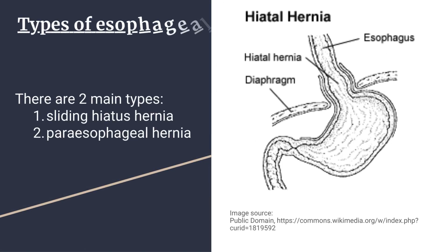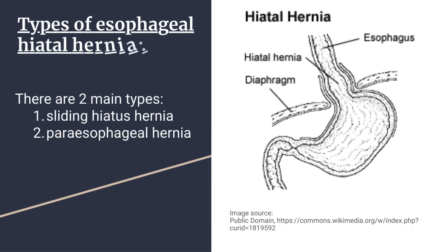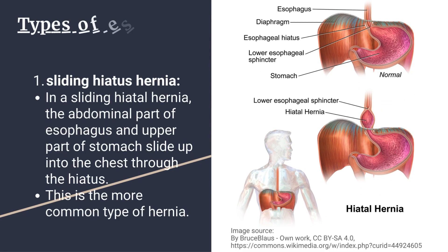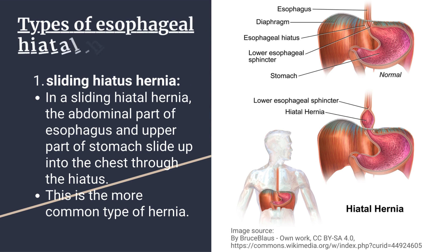Types of esophageal hiatal hernia. There are two main types: sliding hiatus hernia and paraesophageal hernia. Number 1: Sliding hiatus hernia. In a sliding hiatal hernia, the abdominal part of the esophagus and the upper part of the stomach slide up into the chest through the esophageal hiatus. This is the more common type of hernia.